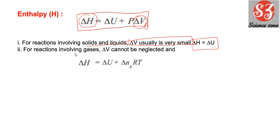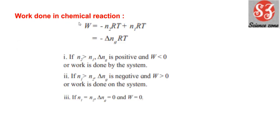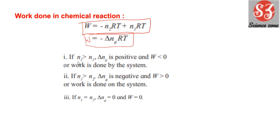उन reactions के लिए जहाँ gas involved है, ΔV को neglect नहीं कर सकते क्योंकि काफी volume change होता है। उस case में ΔH = ΔU + Δn_g RT। Next है work done in chemical reaction: w = −n2RT + n1RT, जिसे कह सकते हो w = −Δn_g RT।